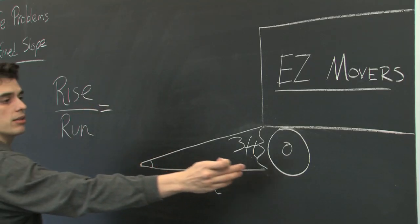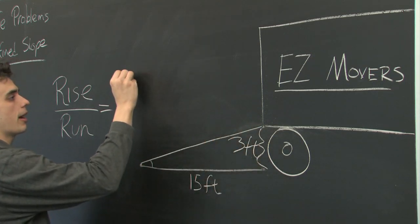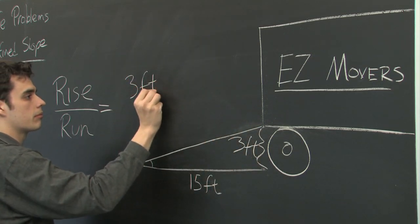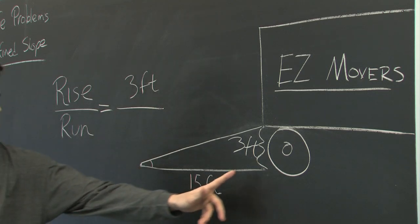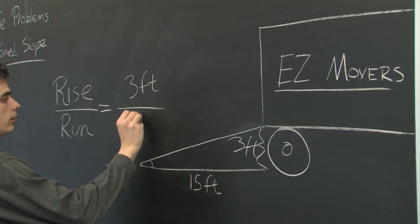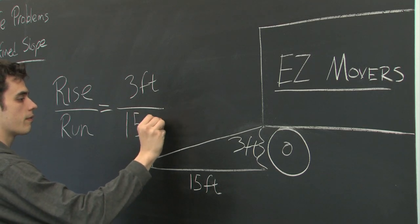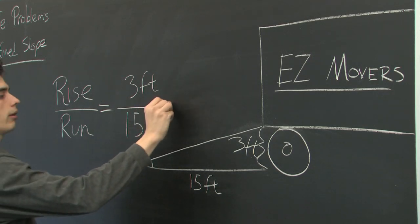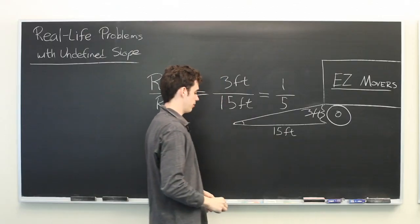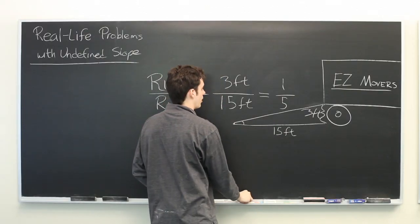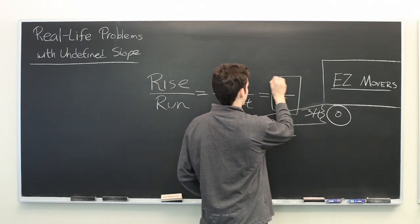So the rise is 3 feet from bottom to top. The run is 15 feet from start to end. And what we are left with is 1 over 5th and the units cancel. So there is our slope.